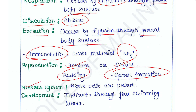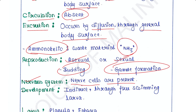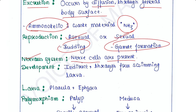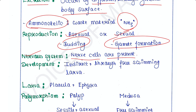Nervous system: some nerve cells are present. Development is indirect because they include larvae in their life cycle. When larvae are present in the life cycle, the development is called indirect.